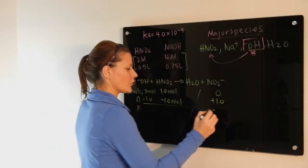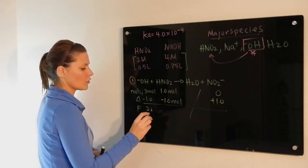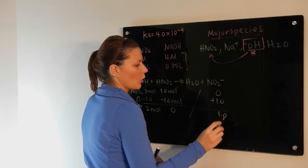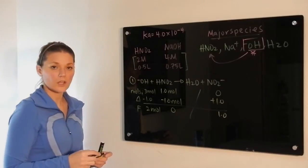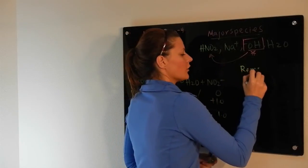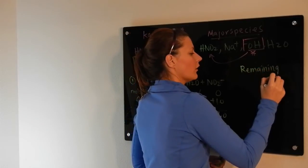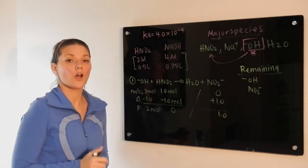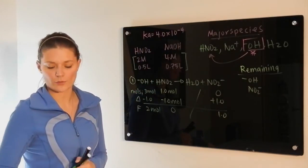So after the first reaction takes place, you have 2 moles of hydroxide left, you have no nitrous acid, and you have 1 mole of NO2 minus. So that means in solution remaining, the two things are hydroxide and NO2 minus. Those two do not react with one another.